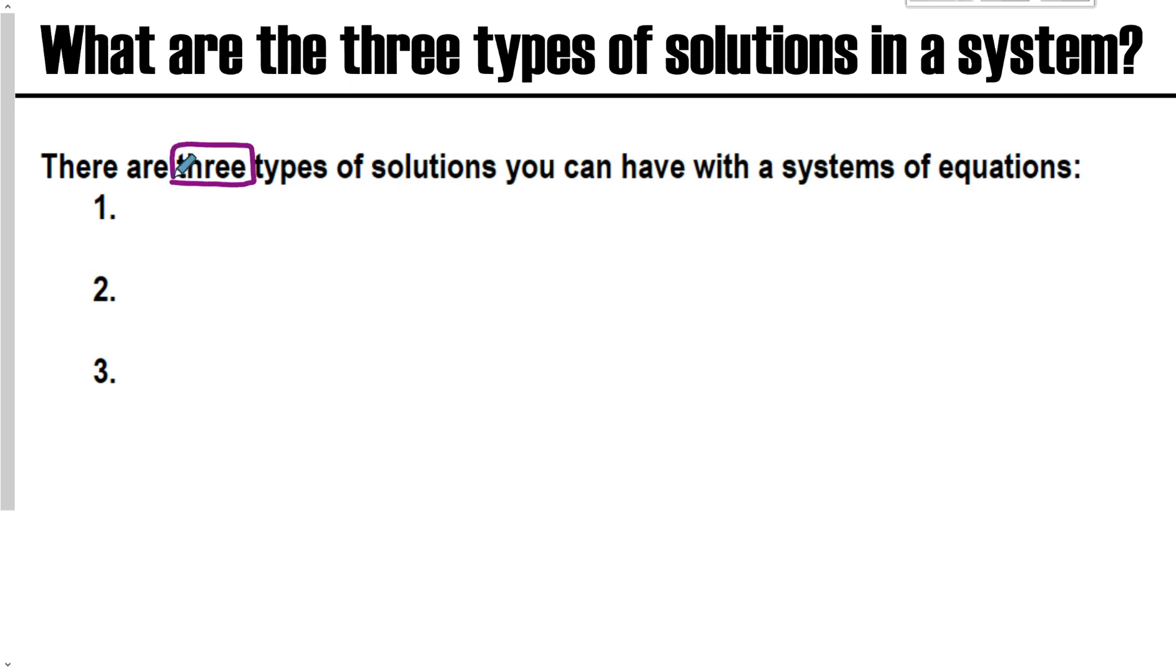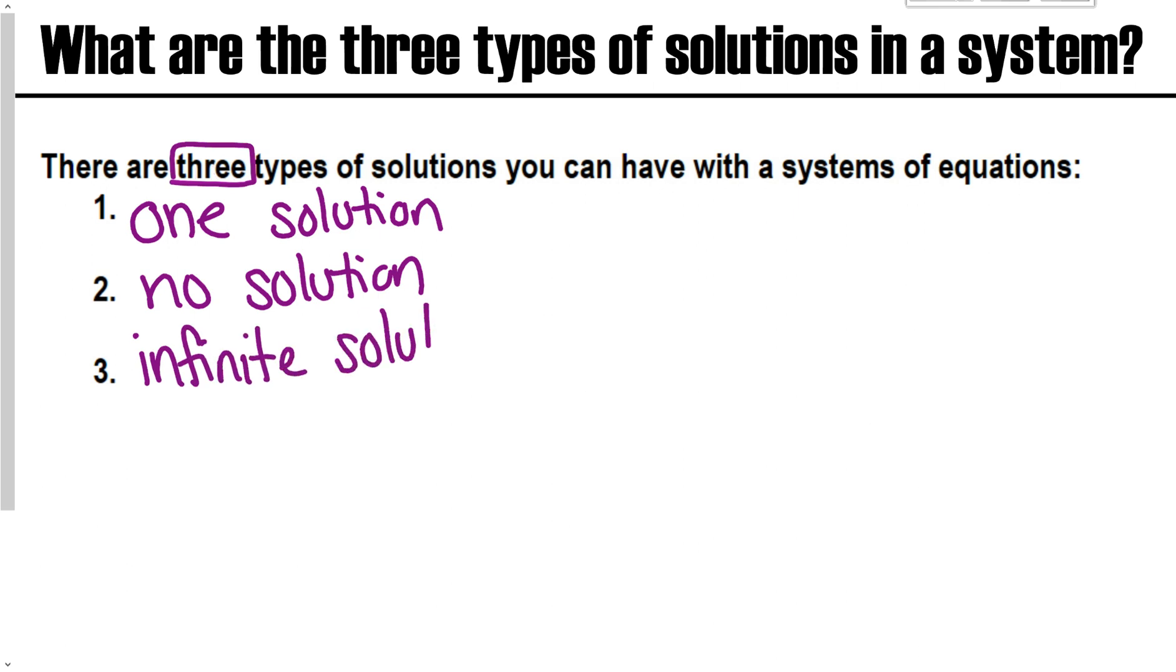There are three in total. You have a one solution, a no solution, and an infinite solution. You may recognize these three types from our first unit, and they are the same. This is referenced back to solving equations. You had three different types of solutions there, and these are the same three types in systems as well. We're going to look at how they affect systems, just like how we looked at how they affected equations.